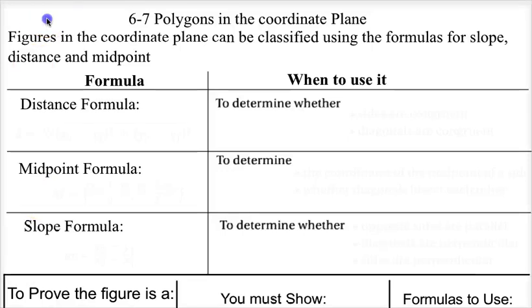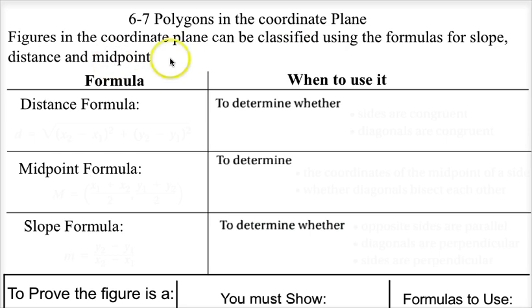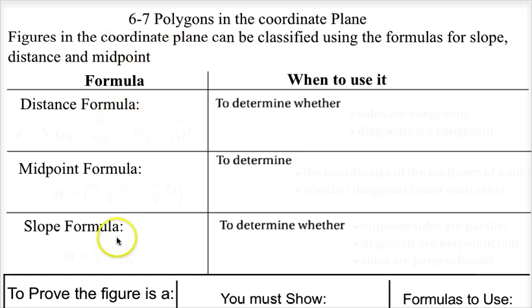This is lesson 6-7, Polygons and the Coordinate Plane. The first thing we're going to do is go over some formulas. Figures in the coordinate plane can be classified using the formulas for slope, distance, and midpoint. So we can figure out if something is a rhombus, parallelogram, rectangle, square, or isosceles triangle by using the distance, midpoint, and slope formulas.